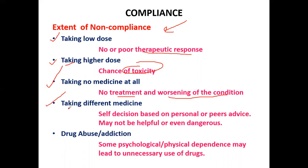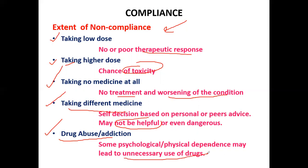Another extent is taking different medicines — based on self-decision from personal or peer advice — which may not be helpful or even dangerous and may not improve the patient's condition, but could further endanger the patient's life. The other extreme is drug abuse or addiction, where psychological or physical dependence may lead to unnecessary use of the drug, such as morphine used by IV drug abusers.